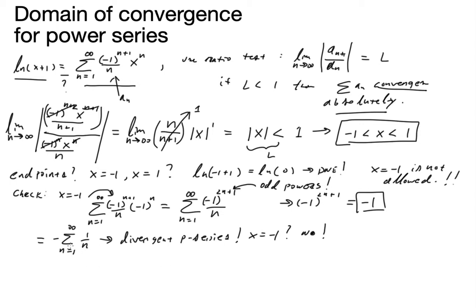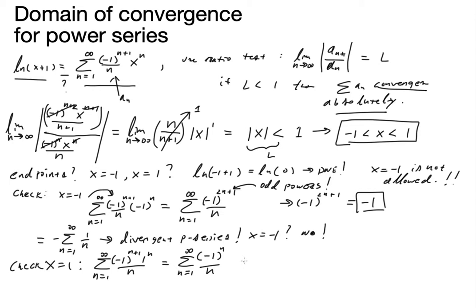So x equals negative 1 is not allowed. Now we check x equals 1, which should be slightly easier. We get the sum from n equals 1 to infinity of negative 1 to the n plus 1 times 1 to the n, all over n. This is an alternating series where 1 over n is positive and decays to 0, so it converges.